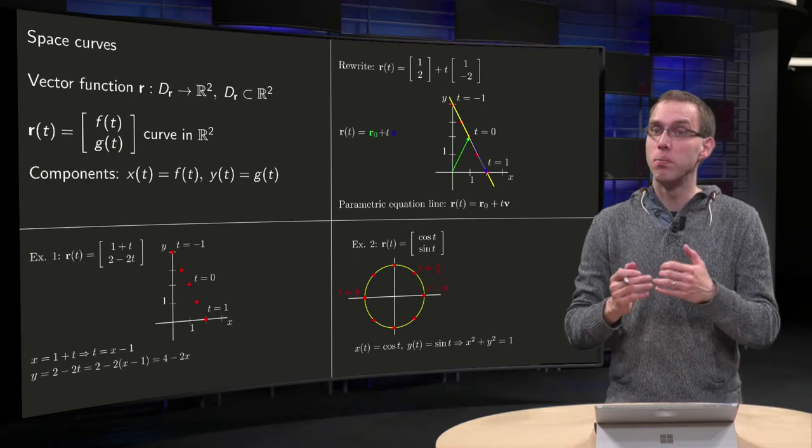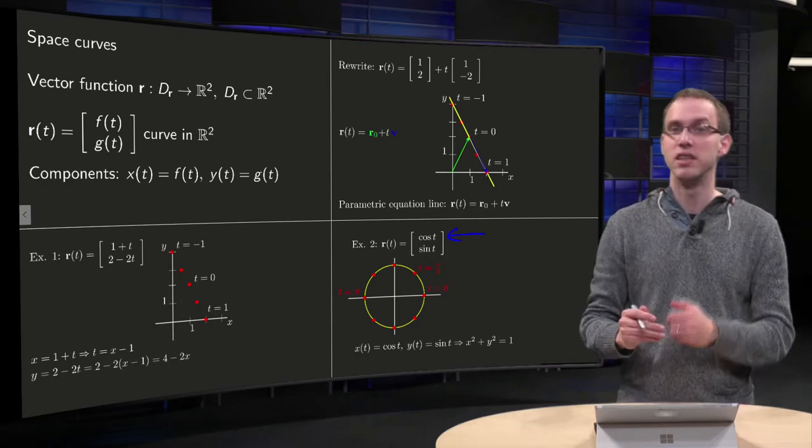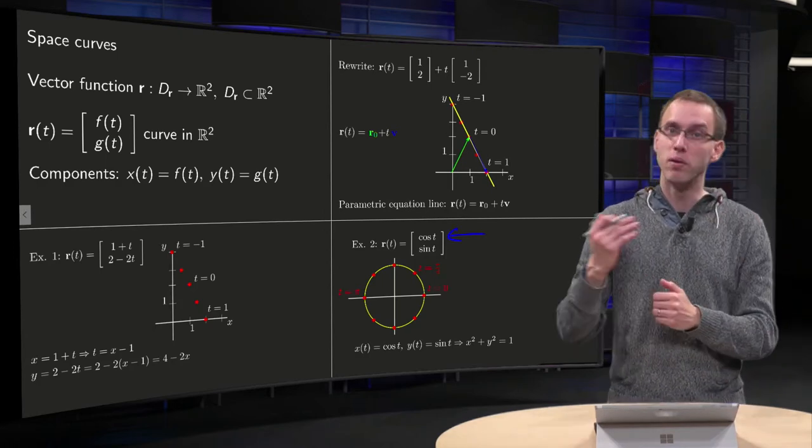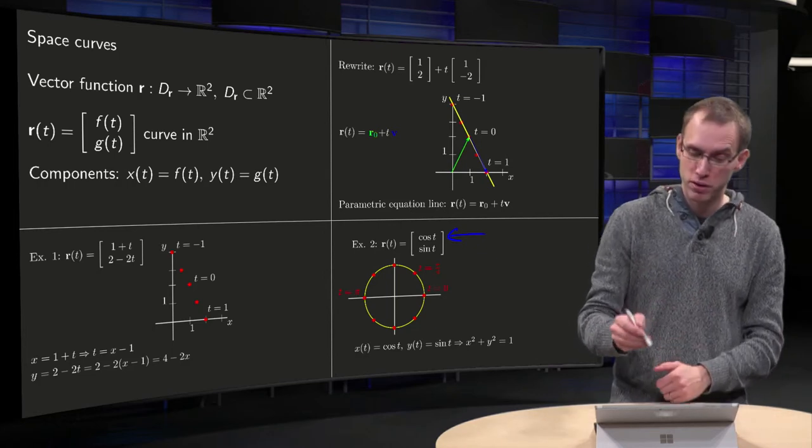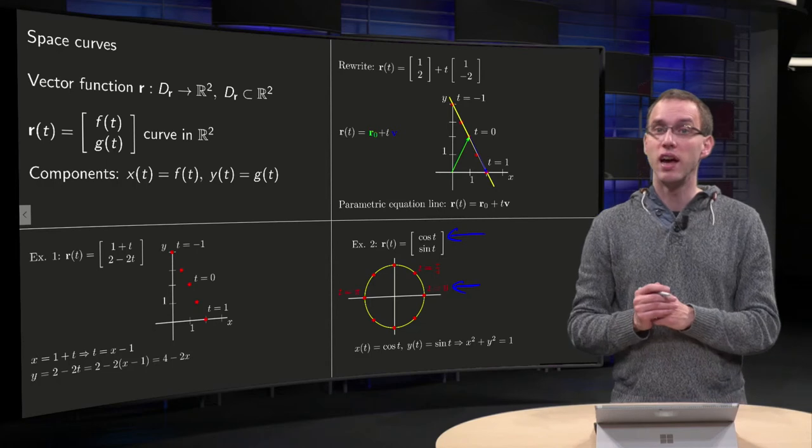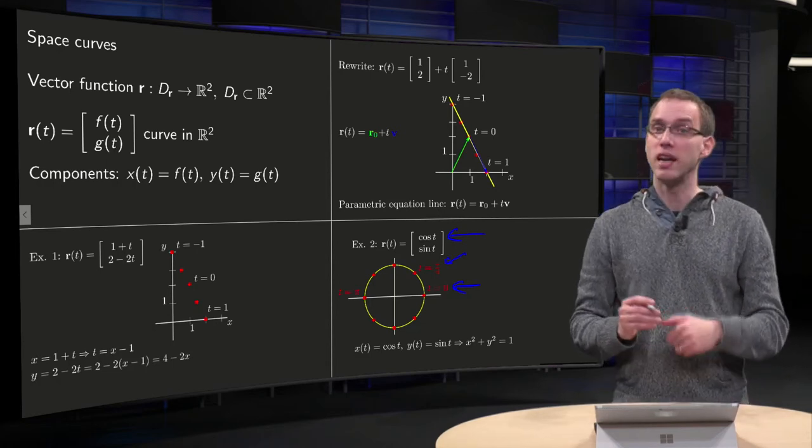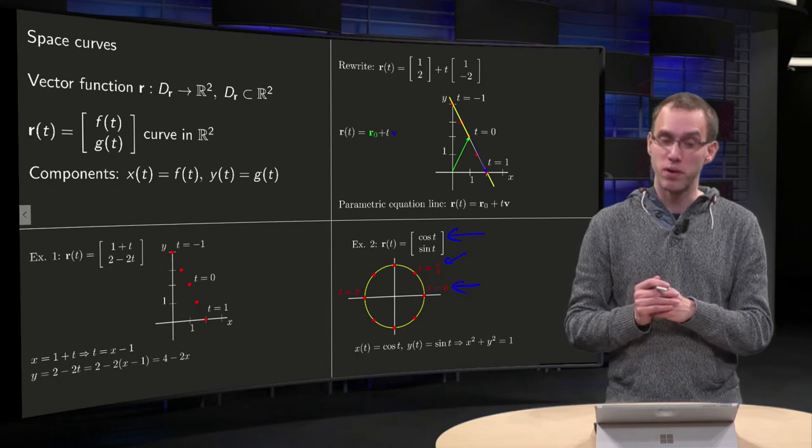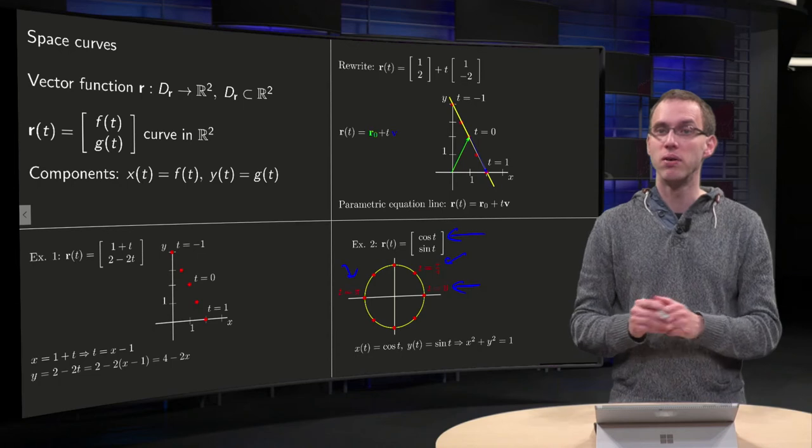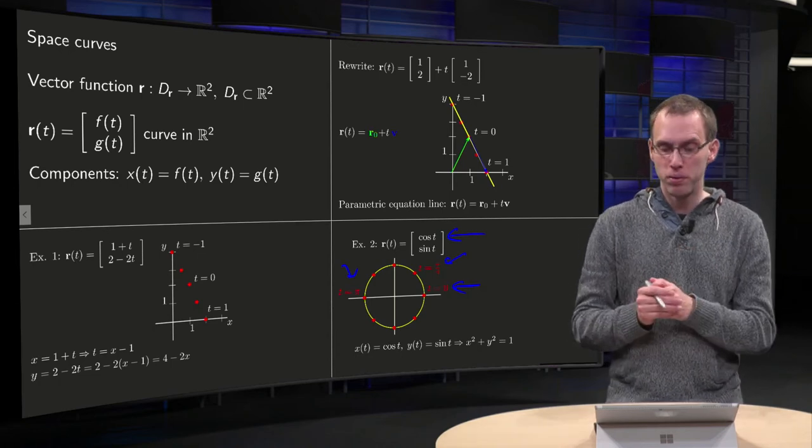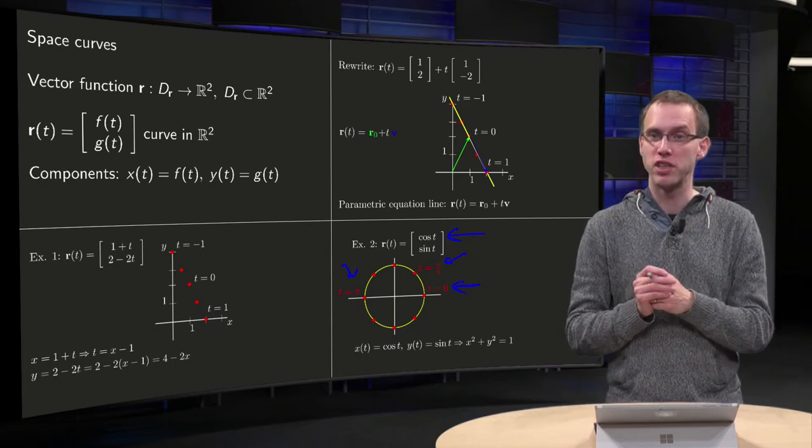Let's look at a slightly more complicated example. R of T equals cosine T sine T. So X of T equals cosine T, Y of T equals sine T. And if we plug in a few values of T, for T equals zero, we are at X equals 1, Y equals zero. T equals pi over four, then X and Y are one half square root of two. And T equals pi, we are at minus one zero. And if we plug in a few more values, we see other red dots, T equals pi over two, 3 pi over four, etc.